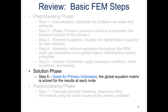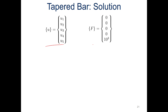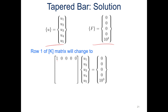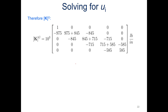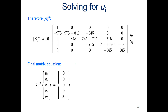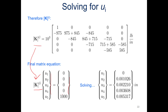Now we solve for the primary unknowns. We have our displacement matrix and forcing matrix. We apply the boundary condition: at node one, displacement equals zero, so we modify that first row accordingly. The load of 5000 pounds is applied at node five. Plugging in the actual values gives our global stiffness matrix, and solving the final matrix equation yields the nodal displacements.